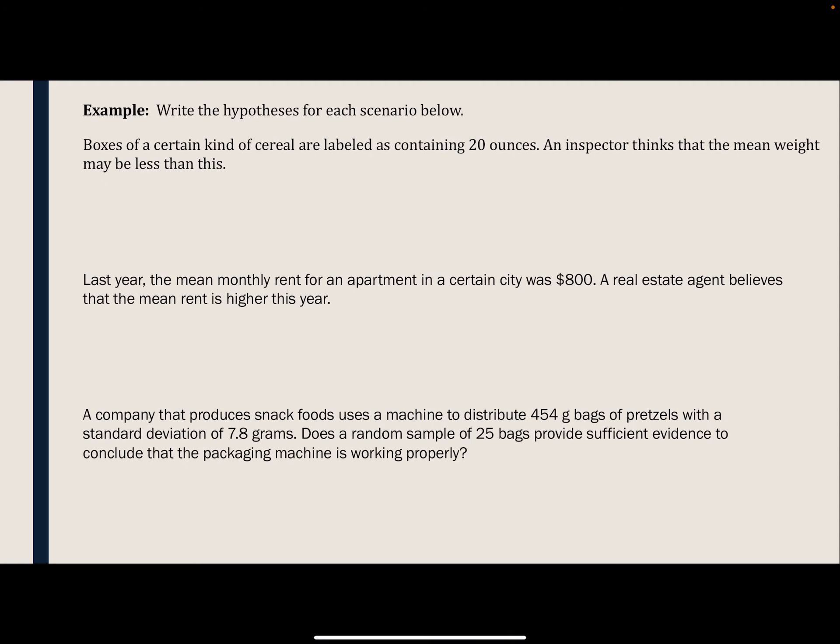All right, let's do some hypotheses with means. It says, boxes of a certain kind of cereal are labeled as containing 20 ounces. An inspector thinks that the mean weight may be less than this. So, again, the null hypothesis is that there is no difference. So we would say that the mean does equal 20. But the claim or the question is, is this mean actually less than 20? Again, notice that the numbers are the same. I'm using a mu now because we're talking about means. But otherwise, everything's the same. It's just the symbols between the two hypotheses.